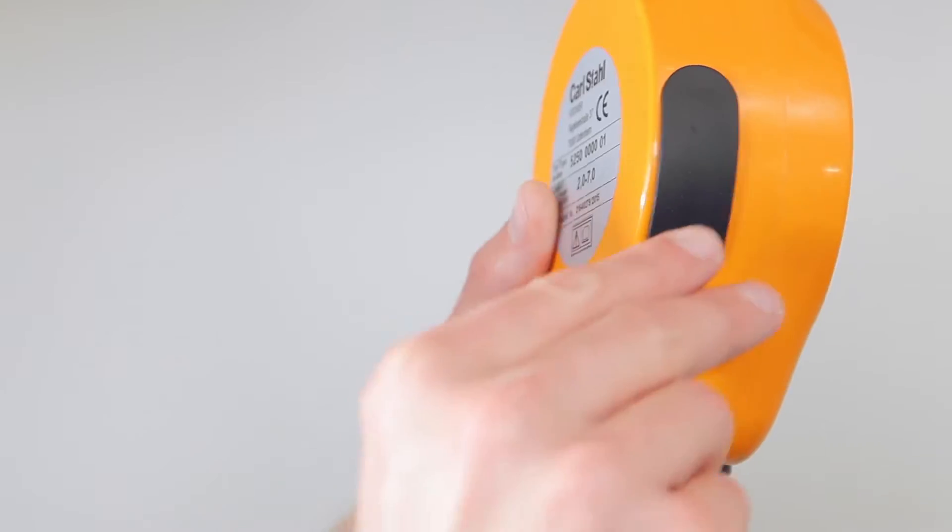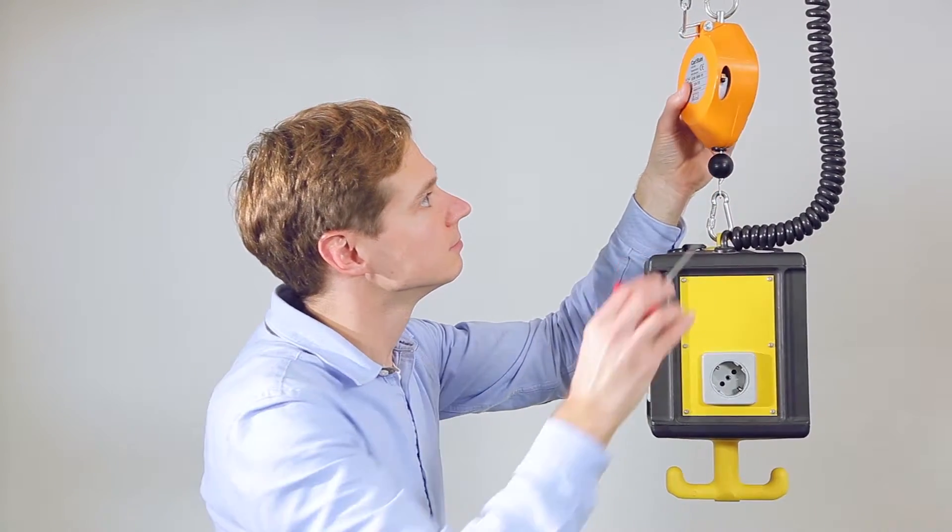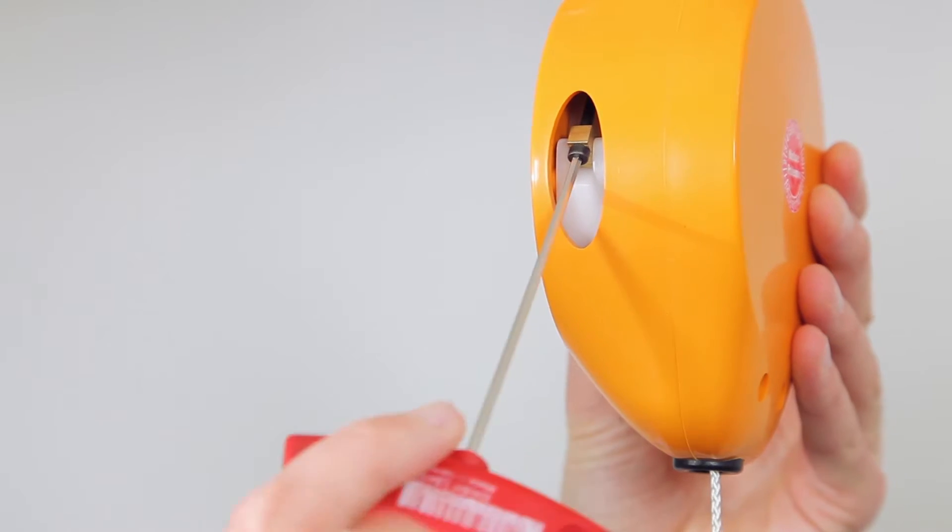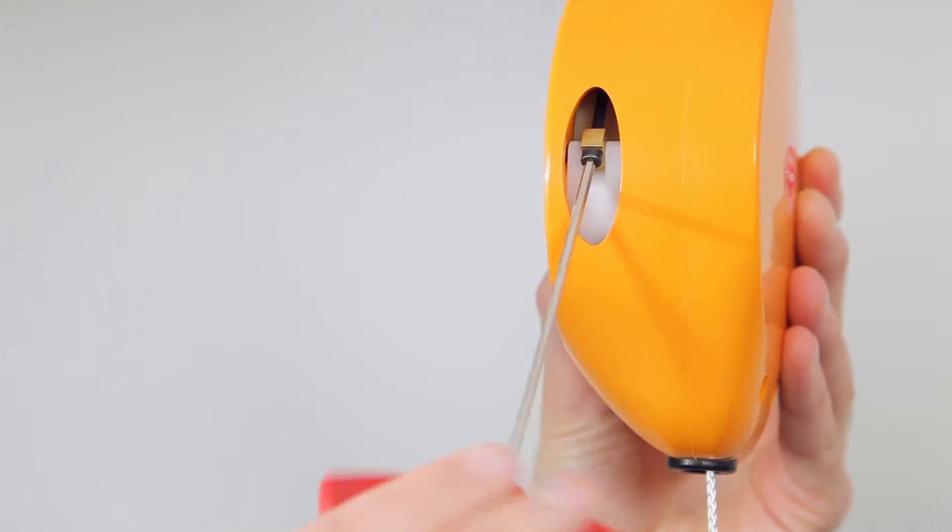Remove the black cover located at the side of the housing. Using an Allen key, adjust the braking force by turning the key in the plus or minus direction as appropriate, but never beyond the end stops.